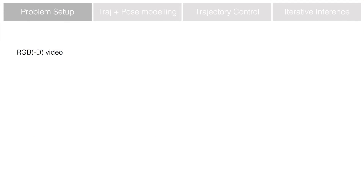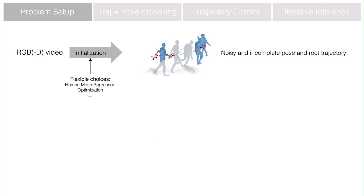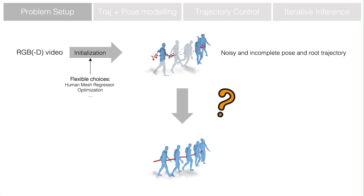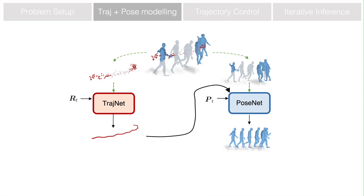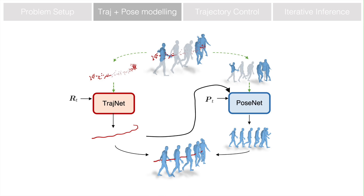Given a monocular video, we obtain the initial noisy and incomplete motion sequence with existing methods, and we aim to reconstruct the complete and plausible motion from that. The task is decomposed by two diffusion models — the trajectory net and pose net — to denoise and infill the global trajectory and local pose separately. The reconstruction is conditioned on the corrupted input, and a complete motion is obtained from that.